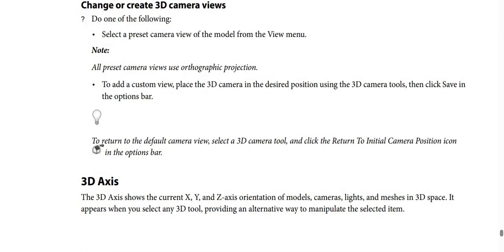How to change or create 3D camera views: do one of the following. Select a preset camera view of the model from the View menu. Note: all preset camera views use orthographic projection. To add a custom view, place the 3D camera in the desired position using the 3D camera tools, and then click Save in the options bar.